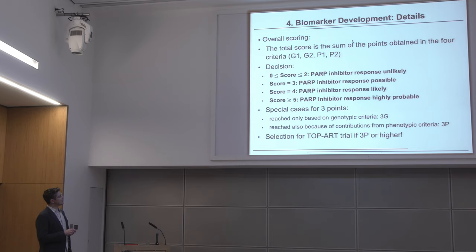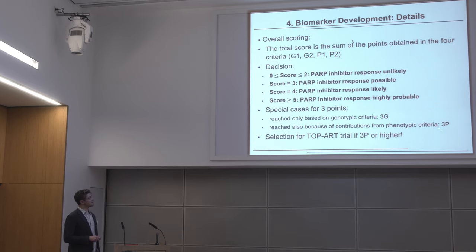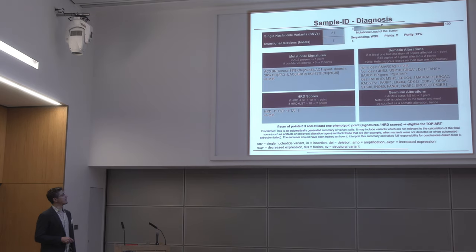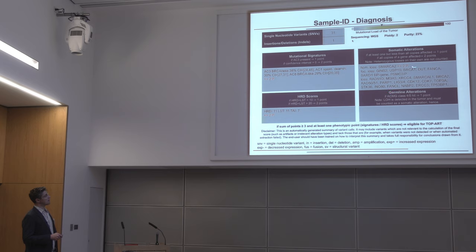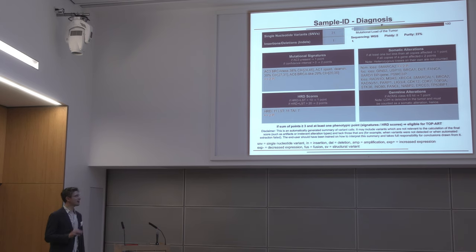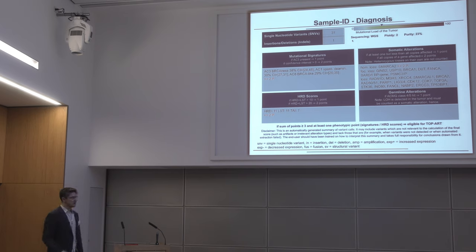With the sum score, the cutoff is 3. We distinguish whether phenotypic criteria are involved (3P) or only genotypic criteria (3G). The cutoff falls exactly between these two: patients scoring 3P, 4, 5, 6, or 7 are called biomarker positive and can be recruited for the TOPART trial. In the molecular tumor board, a script aggregates all this information and assigns points automatically — except for germline, where human geneticists do this by hand and that's important. The board then discusses the score and decides on patient inclusion.